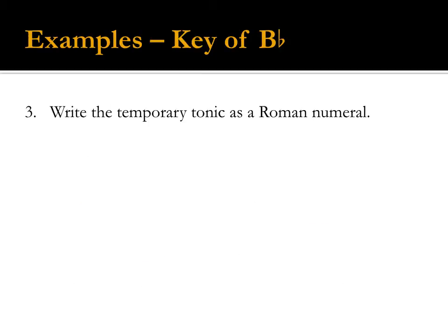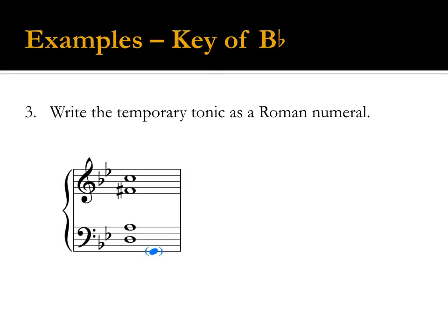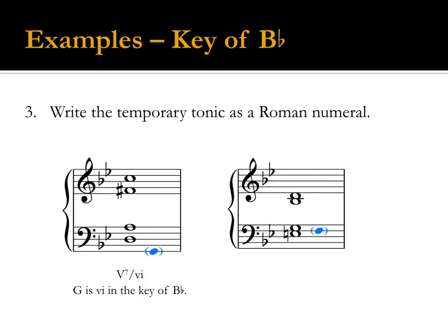The third step is to write the temporary tonic as a Roman numeral. G is scale degree 6 in the key of B-flat, so you would write V7 of 6. F is the temporary tonic in this chord; F is scale degree 5 in the key of B-flat, so this chord is a half-diminished seventh of 5.